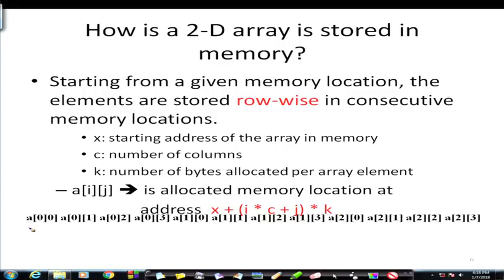The matrix is stored as a[0][0], a[0][1], a[0][2], a[0][3] — so there are 4 columns in one row. Then the second row: a[1][0], a[1][1], a[1][2], a[1][3], and so on. This is the arrangement of 3 rows each having 4 columns. Using this formula, which is intuitive, we can find out the exact location of any particular element.